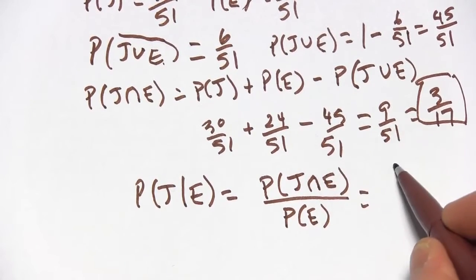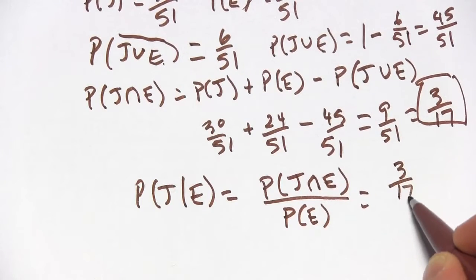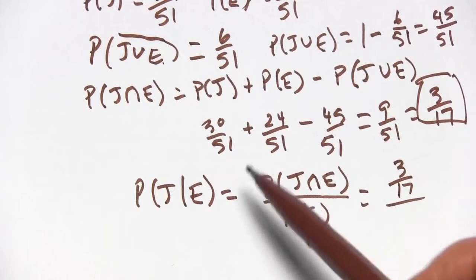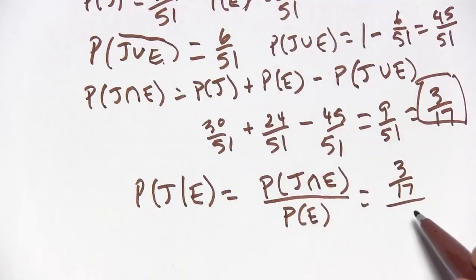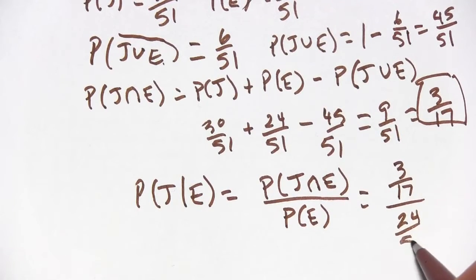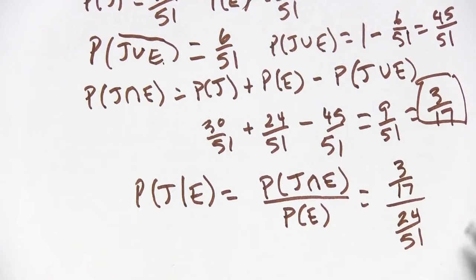And let's see, the intersection we just said was 3 17ths. And the probability of being an economics major, that was 24 51sts. So we've got a complicated fraction here.